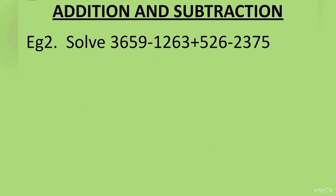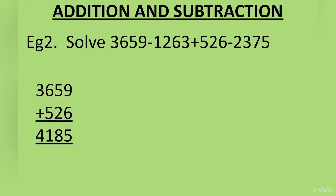Example 2. Here this is a combination question where addition and subtraction are given together. Solve: 3,659 minus 1,263 plus 526 minus 2,375.